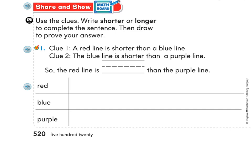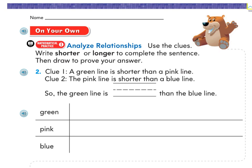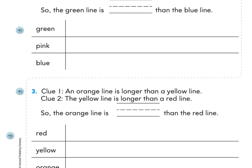On page 521, I'll read the first clue: clue one, a green line is shorter than a pink line. Clue two, the pink line is shorter than a blue line. Draw those first, and then once you've figured it out, fill in the blanks: so the green line is blank than the blue line. Remember your options are shorter or longer.